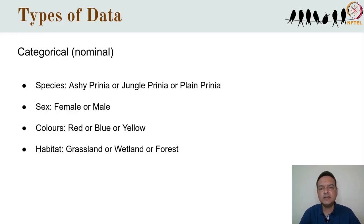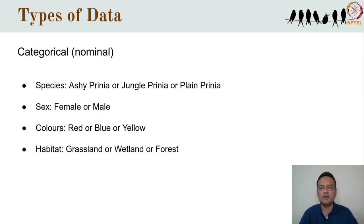Note that the categorical states are distinct entities with no obvious ranking among them. Unless we measure some other attribute of Prinias, we cannot say that Ashy is ranked higher than Jungle Prinia, for example.